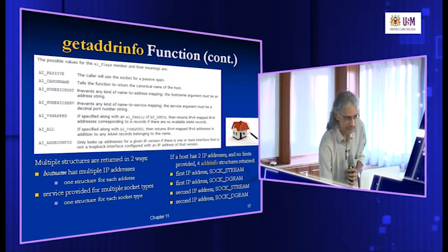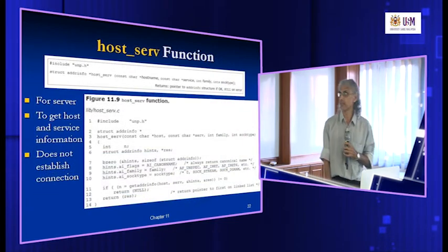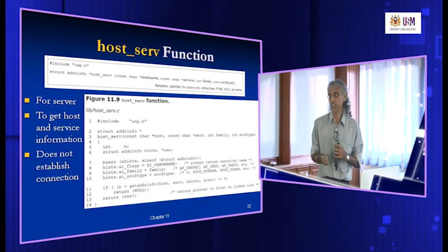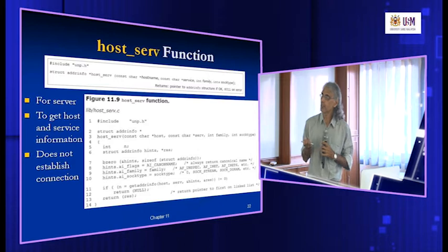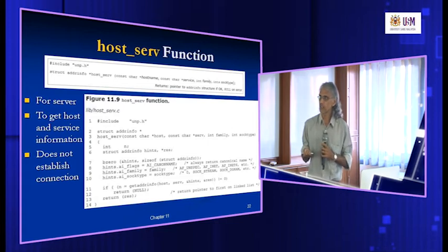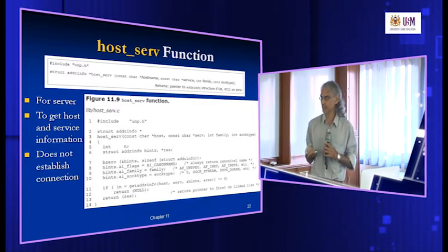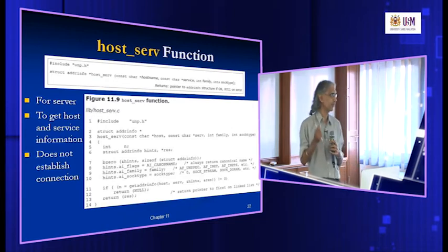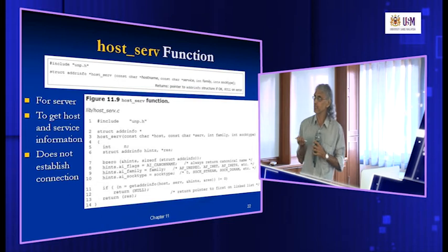Continuing with how we make use of this function in a real program, we give examples of sample code for both client and server using getAddressInfo. The first one we look at is basically a hostServ function, which makes use of getAddressInfo to get host and service information, but it does not establish a connection. It returns a structure containing all the IP addresses of the particular host name plus the port number for the defined service. We use host name and service name as parameters.